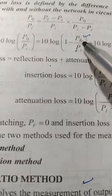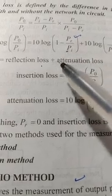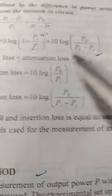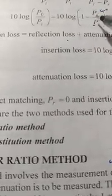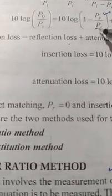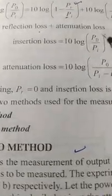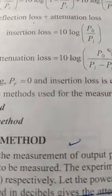The reflection loss term involves reflected power and input power — that is 1 minus Pr/Pi. The term Pr/Pi is known as return loss. So insertion loss equals log of P0/Pi, and attenuation loss is calculated as log of P0/(Pi minus Pr). The main distinction is P0 and Pi versus Pi minus Pr in the denominator.